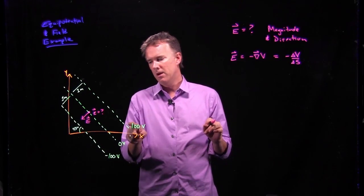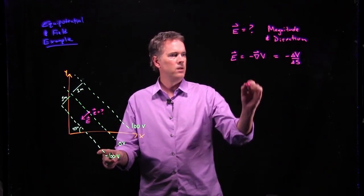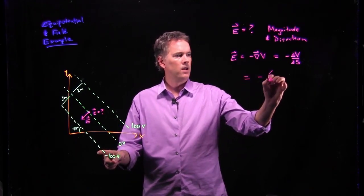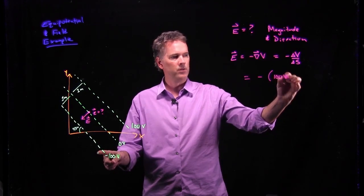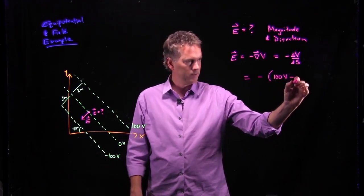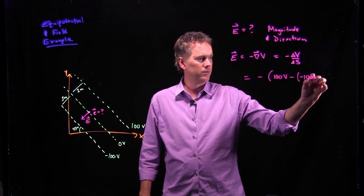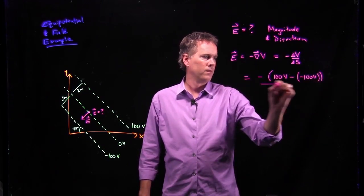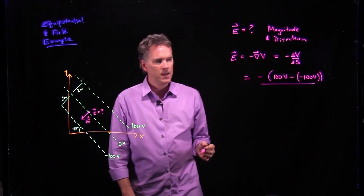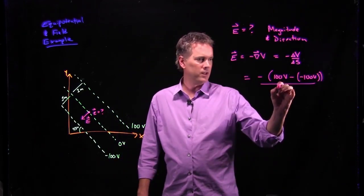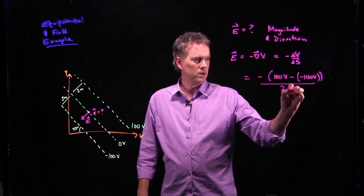So if I go from here to here, what do we get? We get 100 volts minus negative 100 volts, and delta s over that distance is 2 meters.